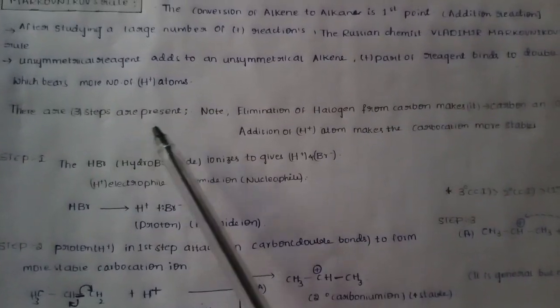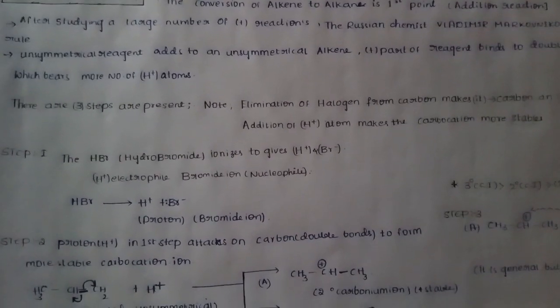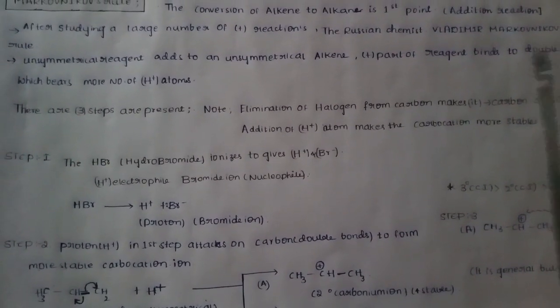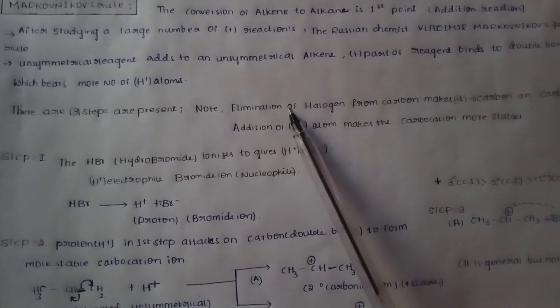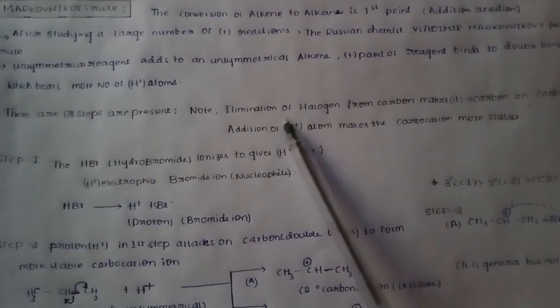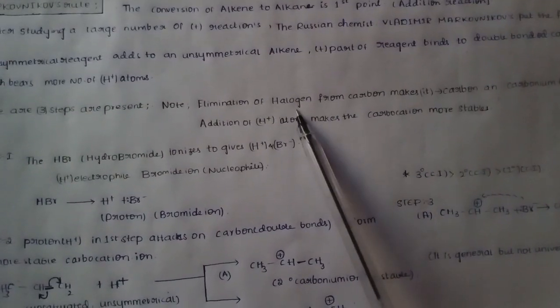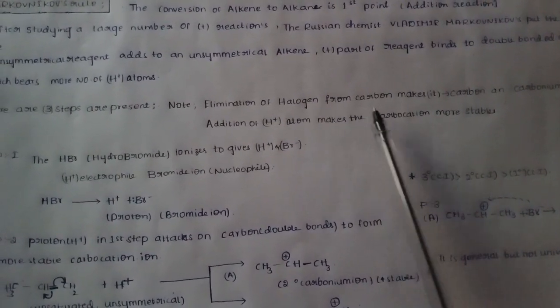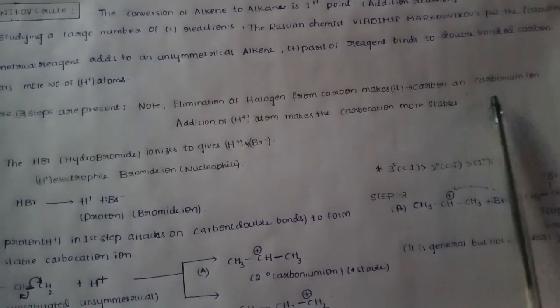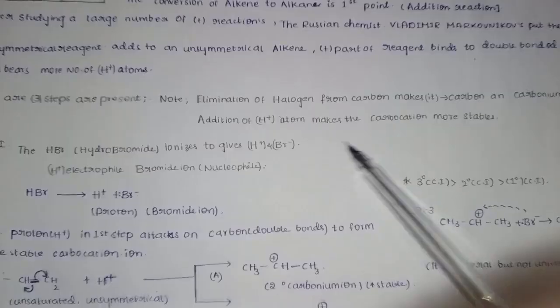There are three steps present in this mechanism. Note: elimination of halogen from the carbon makes it a carbocation — a carbonium ion — and there is a substrate involved.